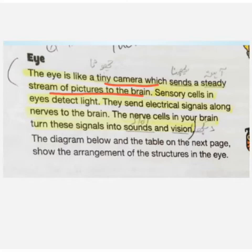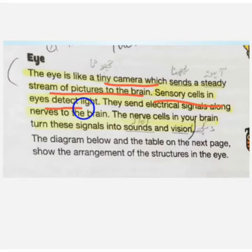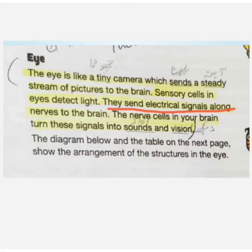The eyes will only detect the light. These are electrical signals. They send electrical signals along the nerves to the brain. The nerve cells in the brain change the signals to sound and vision.